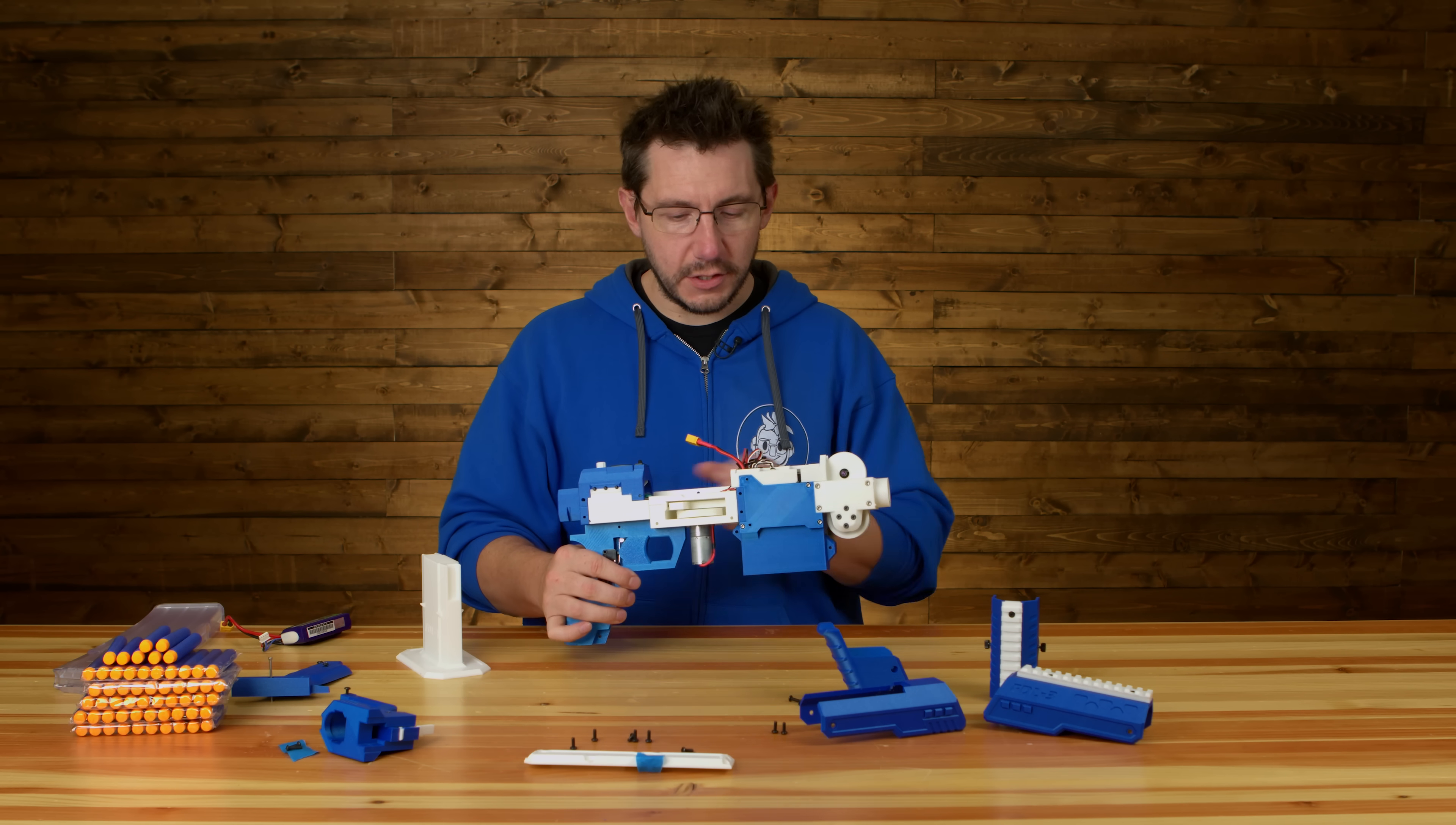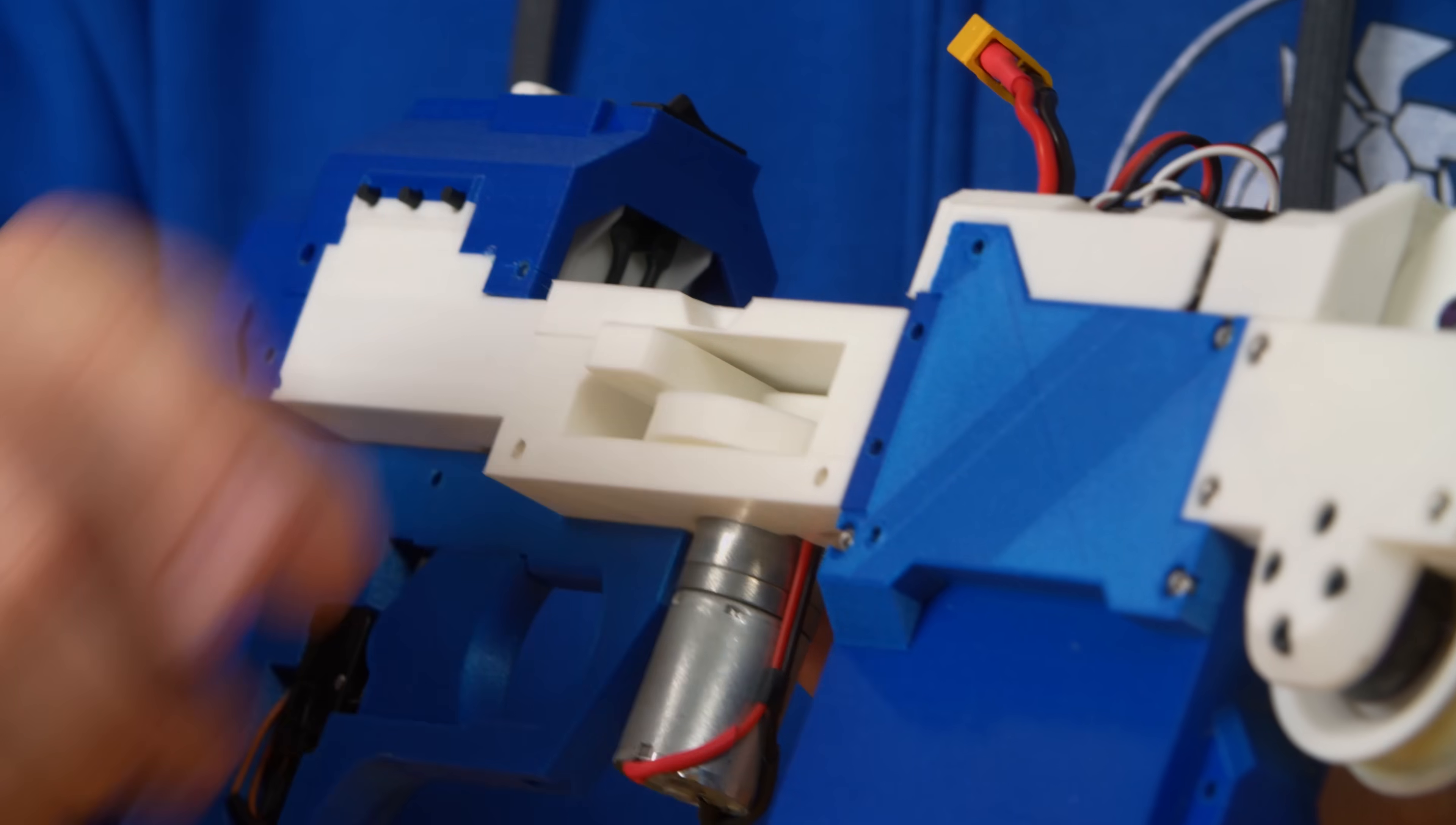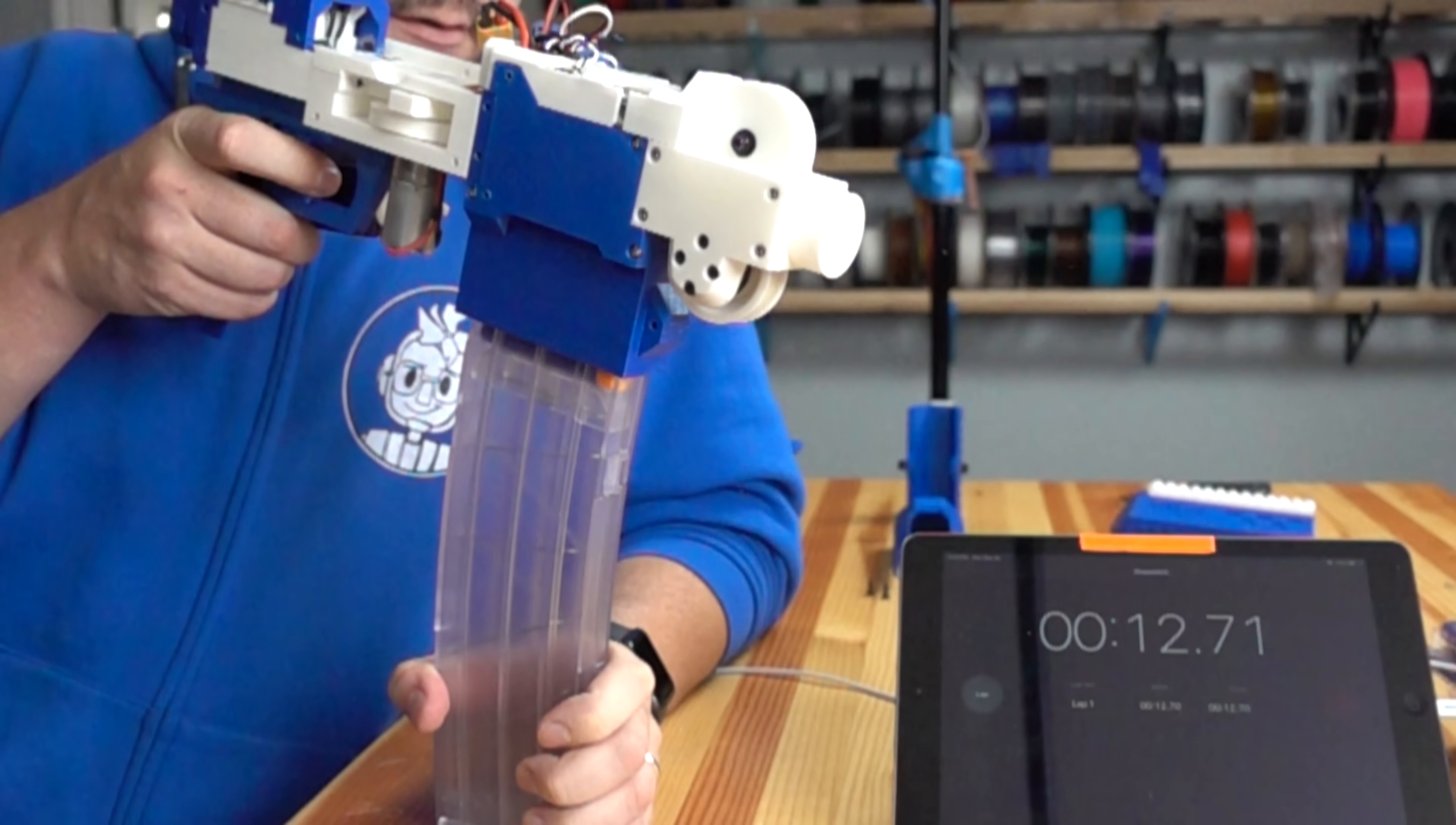If I turn the speed down and I go to the rate of fire and I set that all the way up, then what you'll see is these flywheels not spinning as fast, but the pusher, the little thing that pushes the Nerf darts operating at a crazy rate of speed. That's pretty cool. And obviously if you turn the speed and the rate of fire up, you just have this insane machine capable of firing Nerf darts at incredible rate of speed.